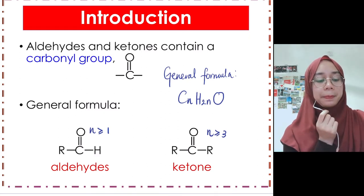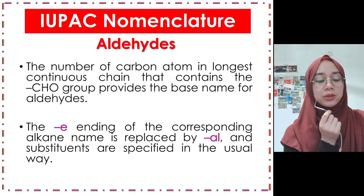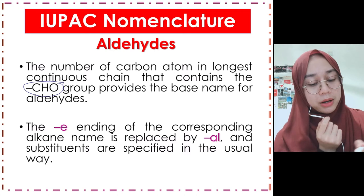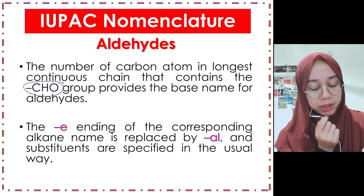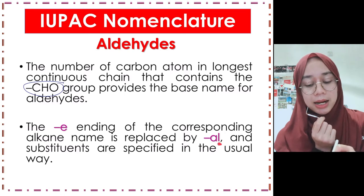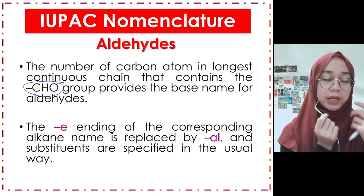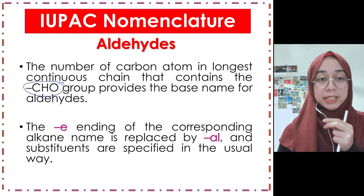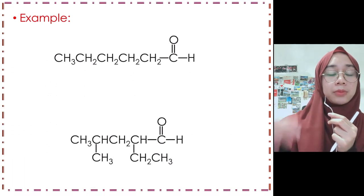Now we move into IUPAC nomenclature for aldehyde. The number of carbon atoms in the longest continuous chain that contains the CHO group provides the base name for the aldehyde. The -E ending from alkane is replaced with -AL. Substituents are specified in the usual way, the same as before.